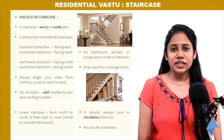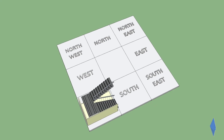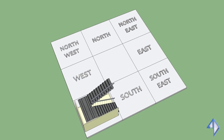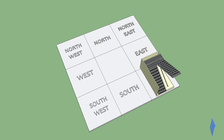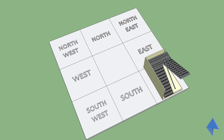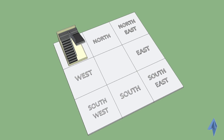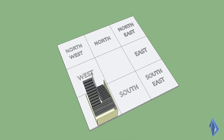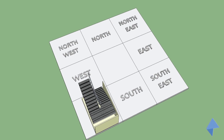For construction of an external staircase: if a staircase is to be placed in the south-west direction, it should be facing west. If it's in the south-east direction, it should be facing east. If it is in the north-west direction, it should face north. If it is constructed on the south-west direction, it should face south.